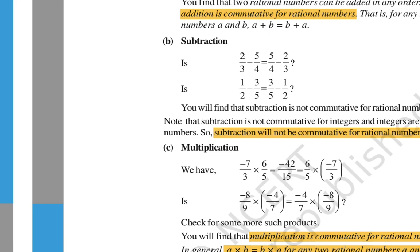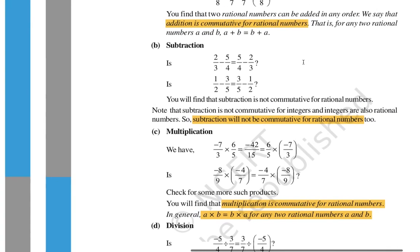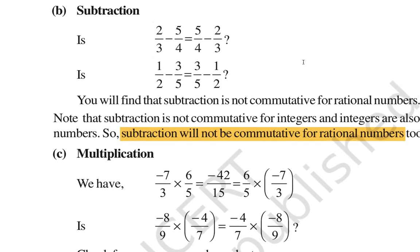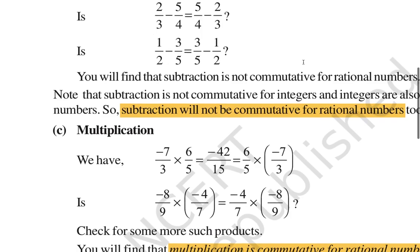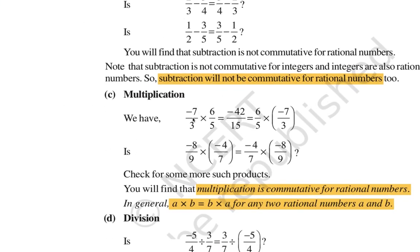For subtraction of rational numbers: if you subtract and then exchange the numbers, you will not get the same result. For example, simply with integers: 3 minus 2 equals 1, but 2 minus 3 equals minus 1 — not the same. Similarly for rational numbers, subtracting and exchanging numbers gives different results, so subtraction is not commutative for rational numbers.